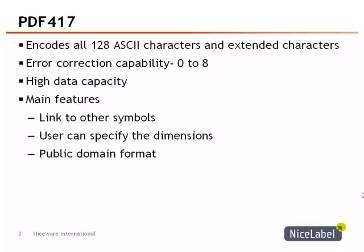The PDF-417 2D code has an error correction level with a rating between 0 to 8, with 8 being the maximum. AIM recommends a minimum level of 2.